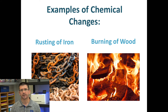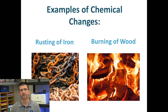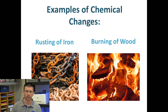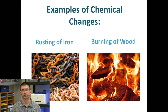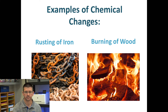Other examples of chemical change include rusting iron, which is that process of oxidation where the iron is actually combining with oxygen in the air. Burning wood, as we mentioned, is also a chemical change.